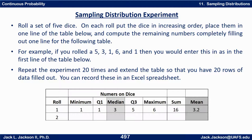We know that if we roll a single fair die, it either comes up with 1, 2, 3, 4, 5, or 6 with equal probability. If you did that a whole bunch of times, we would expect to get a discrete uniform distribution. If we did a frequency histogram or relative frequency histogram, we would expect all the bars to be at least approximately the same height.